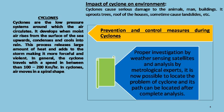Regarding the impact of cyclones on the environment: since cyclones move at speeds of 100 to 200 kilometers per hour, they can cause serious damage to animals, people, and buildings. They uproot trees, tear off roofs of houses, and sometimes cause landslides.